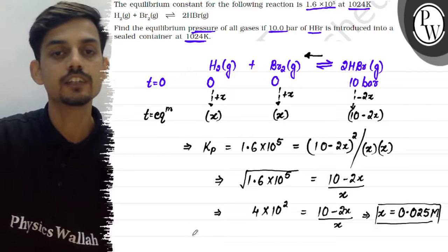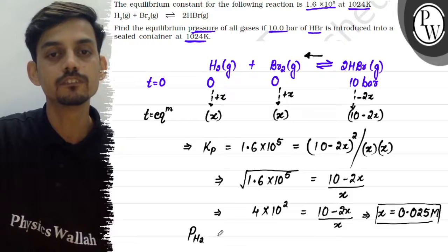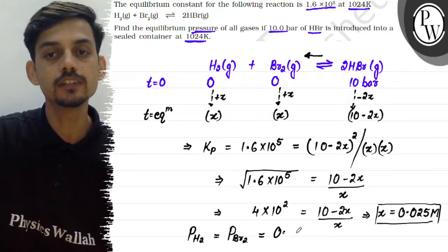So the equilibrium partial pressure of H₂ and the equilibrium partial pressure of Br₂ are both equal to 0.025 bar.